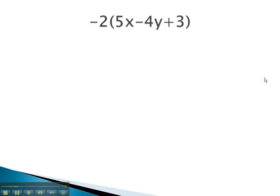In this problem, we have negative 2 in front of the parentheses. So we're going to take that negative 2 and multiply it by each term inside the parentheses. First, we will start with negative 2 times 5x. Negative 2 times 5 is negative 10x.